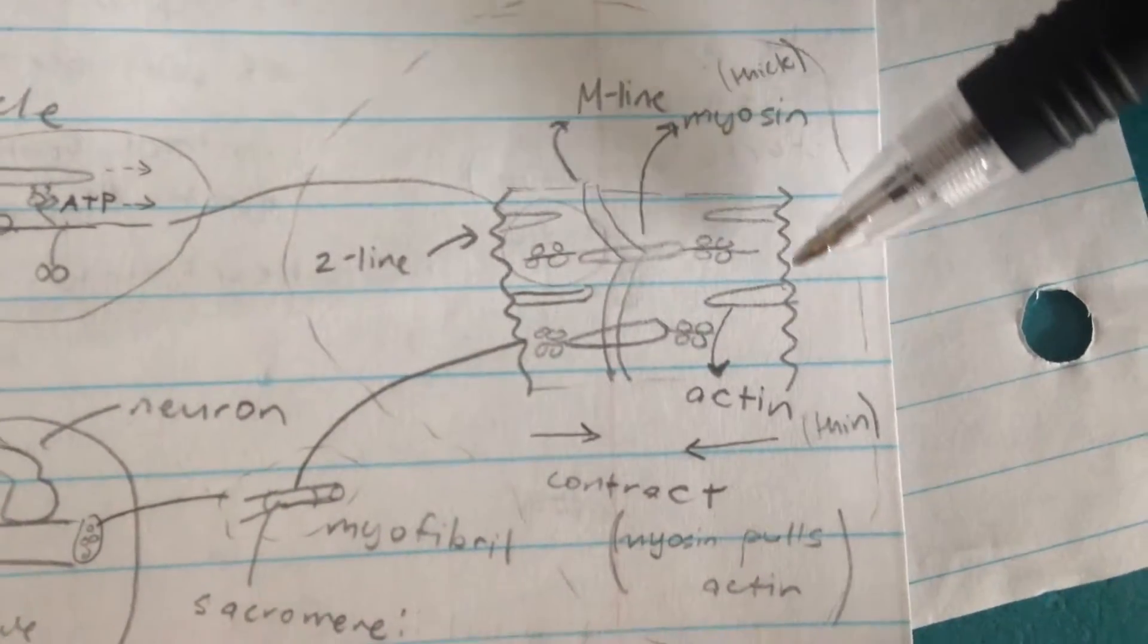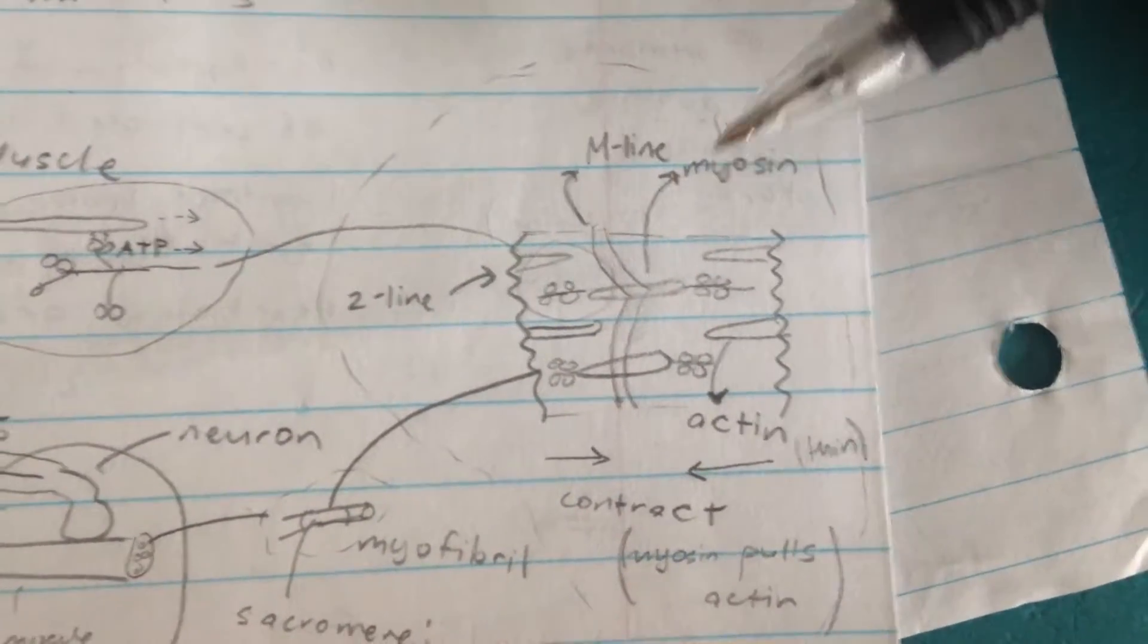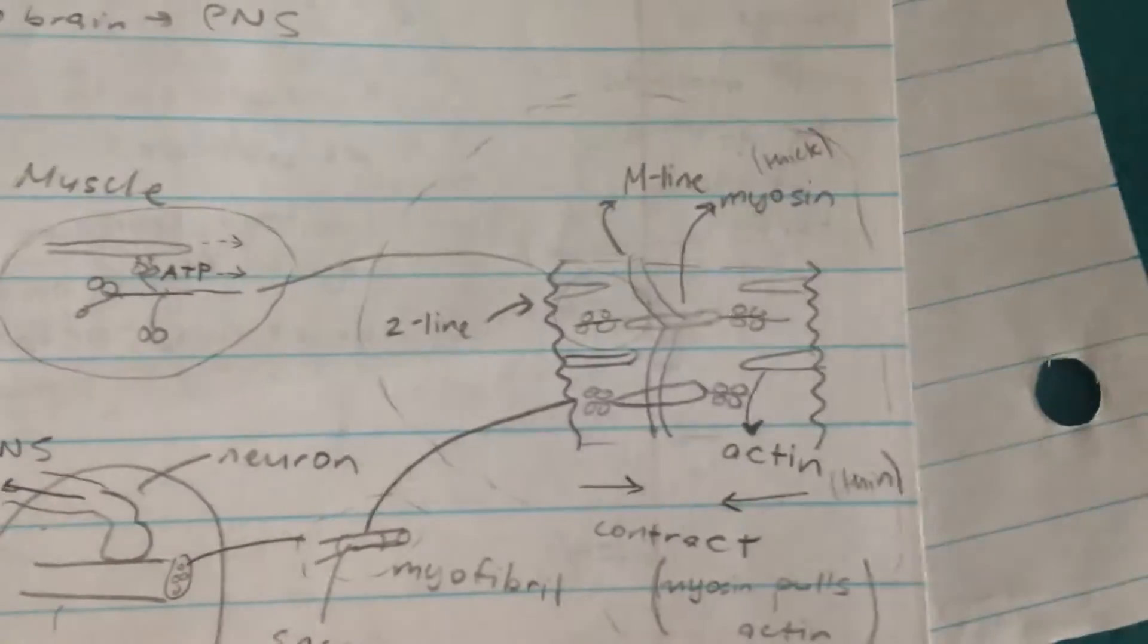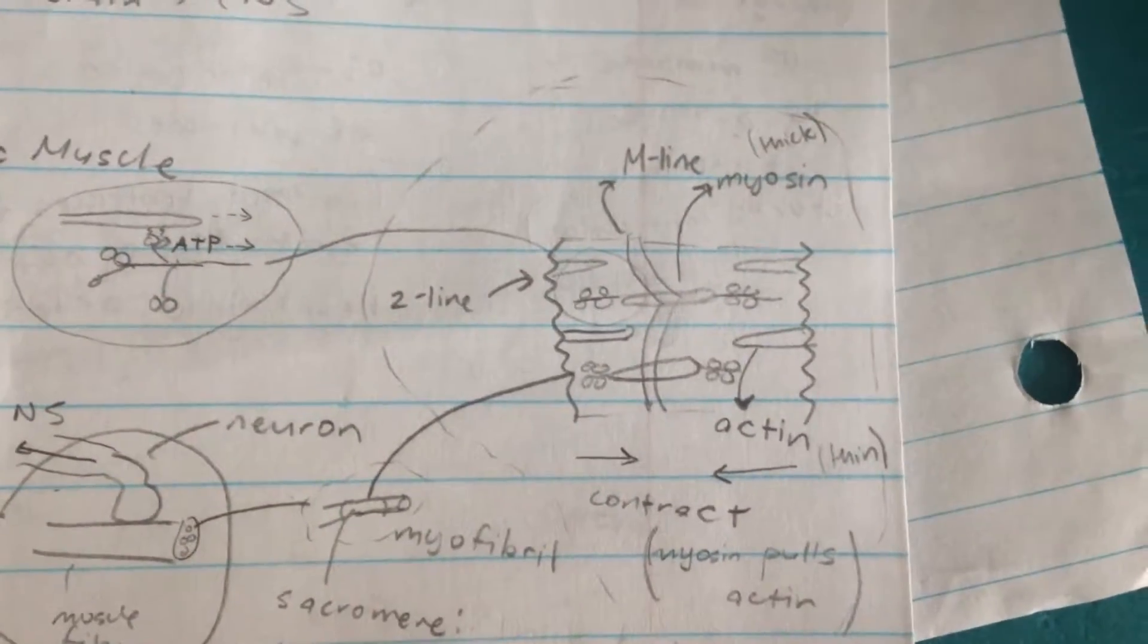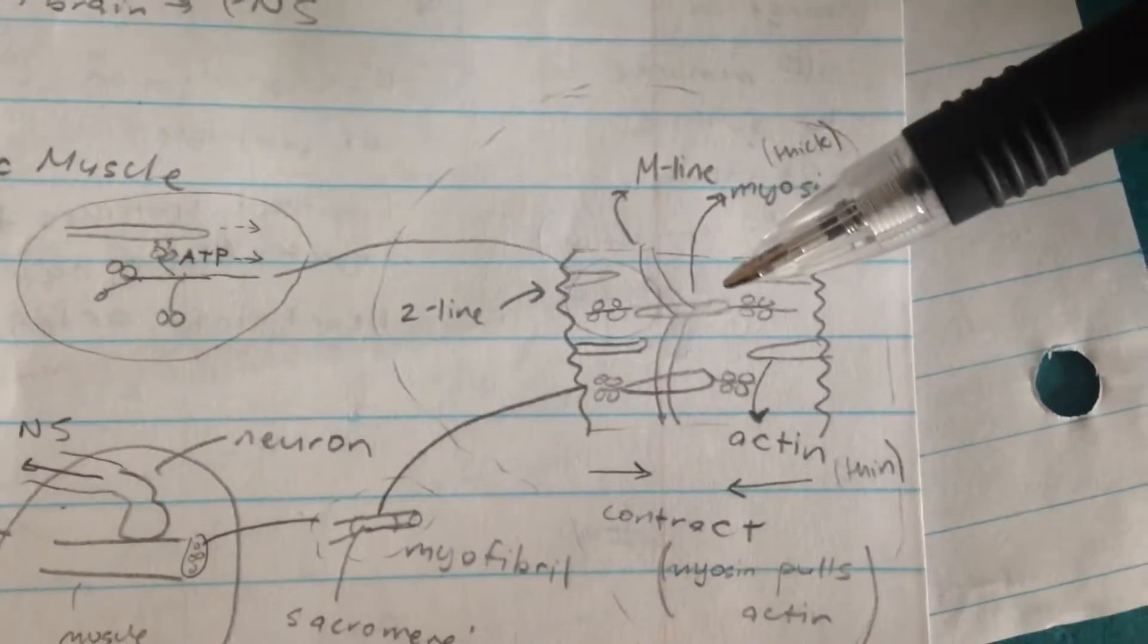These are the two Z lines, over here and over here. Between the two Z lines, we have something called the M line. Myosin is the protein, the thick filament, which resides on the M line.